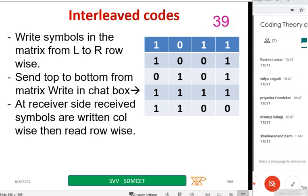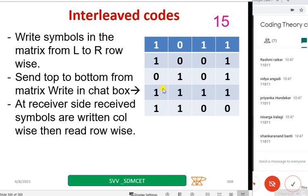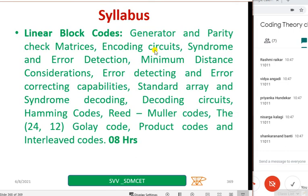One important advantage of interleaving is that if there is a burst error, it becomes a distributed error. This topic will also come up in convolutional coding. Basically, interleaving converts burst errors into distributed or random errors — that is the fundamental advantage. Many techniques exist; this is one of them. This completes the section on interleaving codes and this particular chapter on linear block codes.